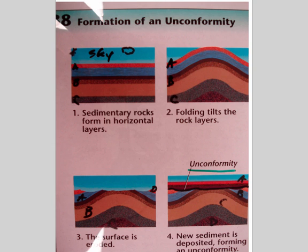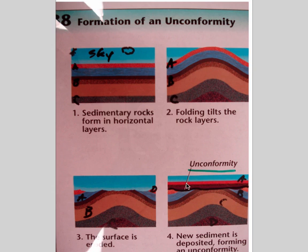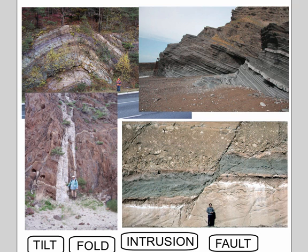Here's how unconformities form over time: rock layers are laid down flat — oldest at bottom, youngest at top. Then you get some folding, but still oldest at the bottom. Then erosion comes by, creating a flat surface. Now you have an unconformity, because above these curved layers you get new flat layers on top.